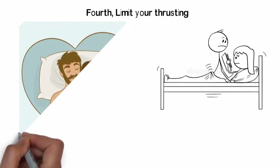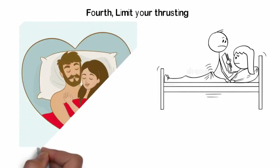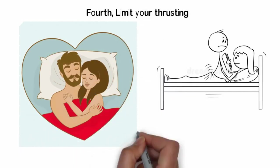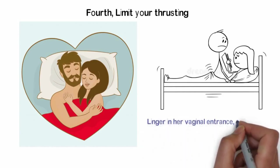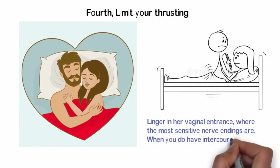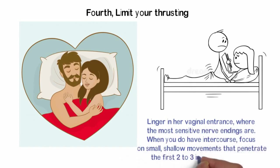Sure, throw a little thrusting in there too, but if you feel like you're about to reach the point of no return, there are ways to slow things down without sacrificing her pleasure. Press the end of your penis into her clitoral head. Linger in her vaginal entrance, where the most sensitive nerve endings are. When you do have intercourse, focus on small, shallow movements that penetrate the first 2 to 3 inches of her vagina.